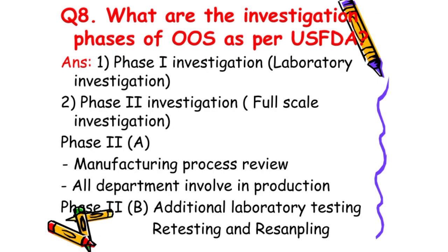Next: What are the investigation phases of OOS as per USFDA? The answer is: there are two phases used to investigate OOS as per USFDA. Number one is phase one investigation, and number two is phase two investigation. Phase two investigation is further divided into two phases: phase two A and phase two B. Phase two A includes manufacturing process review and all departments involved in production. Phase two B includes additional laboratory testing, retesting, and resampling.